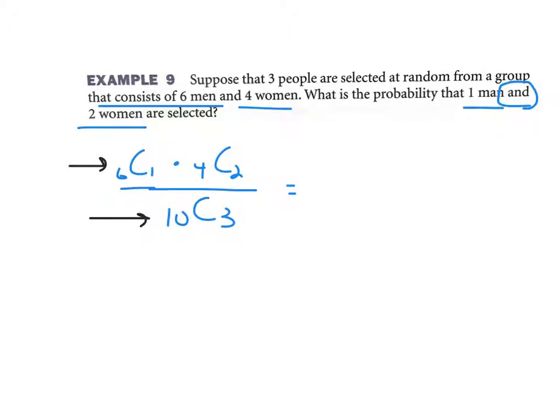I'm going to punch all that in the calculator: 6 C 1 times 4 C 2, put those in parentheses, divided by 10 C 3. And I get three-tenths, three out of ten chance.